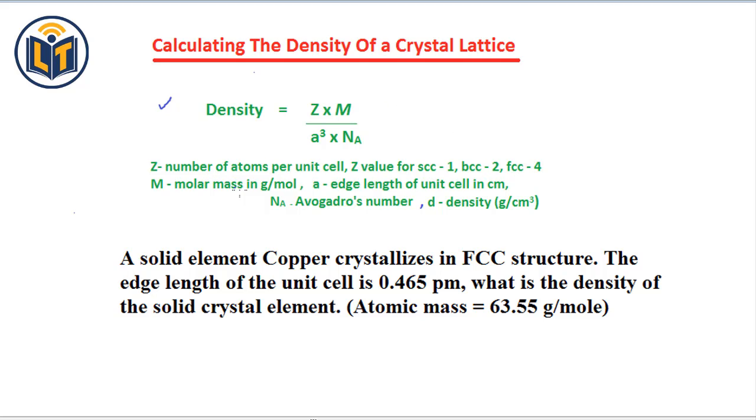Next is M. M is the molar mass in grams per mole or atomic mass in grams per mole. And a cubed, a cubed is the volume of a unit cell, where a is the edge length of unit cell and it is calculated in centimeters.